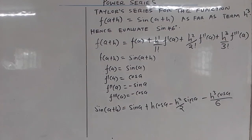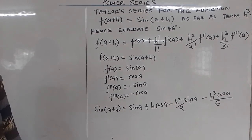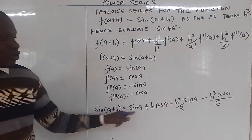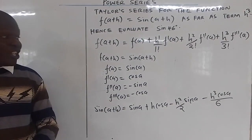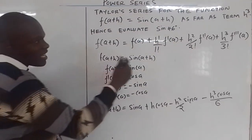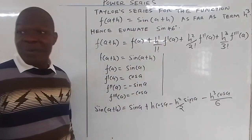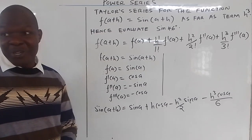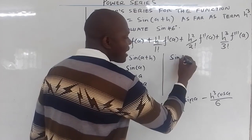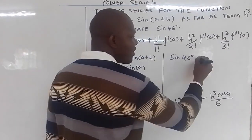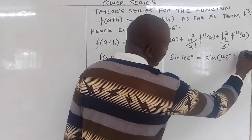Having found the expansion of sin(a+h), we now want to use it to evaluate sin(46°). From the co-function identity, 46° is very close to 45°. So sin(46°) is the same as sin(45° + 1°).